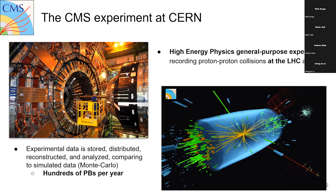The CMS experiment is one of the four general purpose experiments at CERN that collects proton-proton collision data at the Large Hadron Collider. This experimental data is stored, distributed, reconstructed, analyzed, and compared to simulated data. Hundreds of petabytes are collected every year.